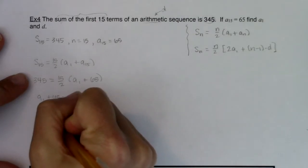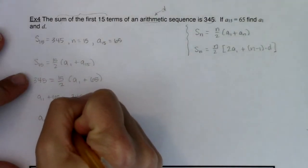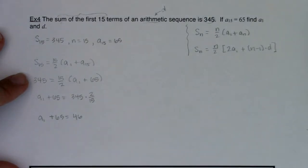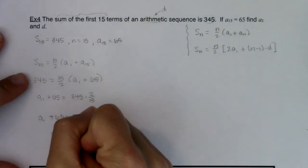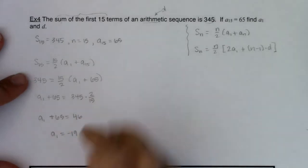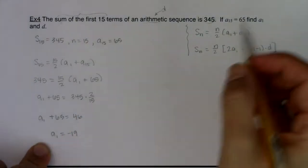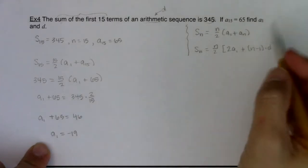So I know a sub 1 plus 65 is equal to 46, and if I subtract 65 from both sides I've got half of my problem done. There's a sub 1, it's equal to negative 19. So I found that. That was the first thing they asked me to find.